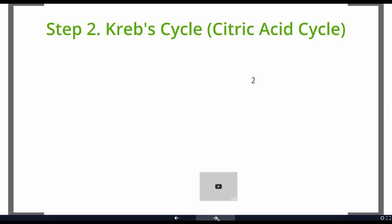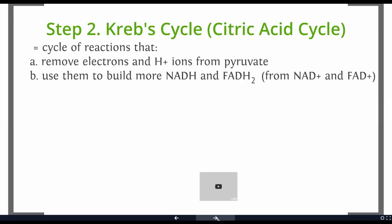The second step of cellular respiration is something called the Krebs cycle or the citric acid cycle. This is a cycle of reactions that's going to do a couple things. It's going to remove electrons and hydrogen ions from pyruvate.